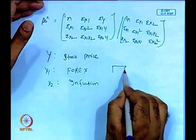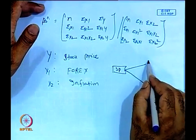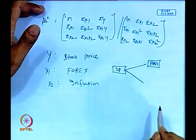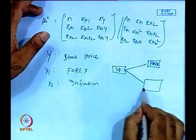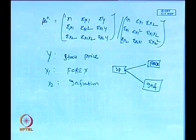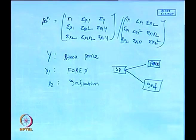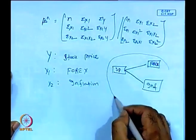The idea is to know how much forex influences stock price and how much inflation influences stock price. This is a typical example of trivariate modelling, since stock price can be influenced by many variables. For this problem, we restrict to stock price versus forex and inflation.